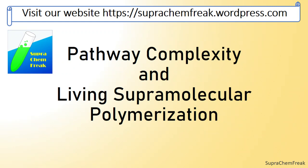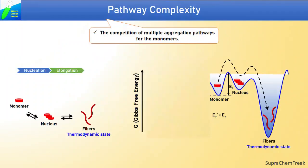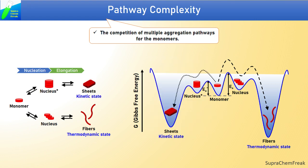Herein, we shall discuss the pathway complexity and living supramolecular polymerization. Pathway complexity during supramolecular polymerization refers to the competition of multiple aggregation pathways for the monomers. As discussed in the previous video, monomers can fall into thermodynamic minimum or get trapped in high-energy, non-equilibrium states.